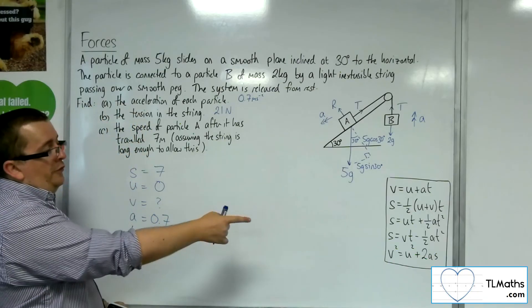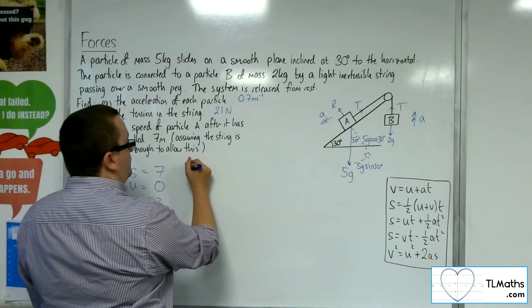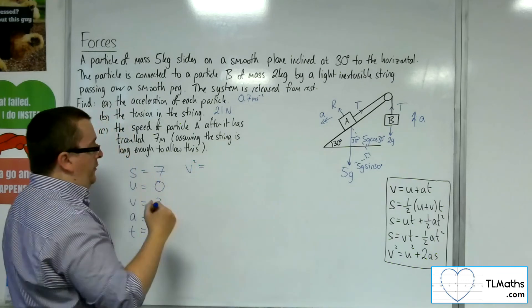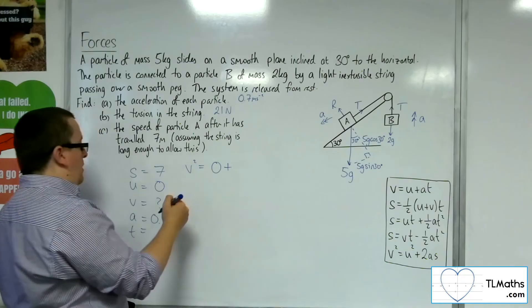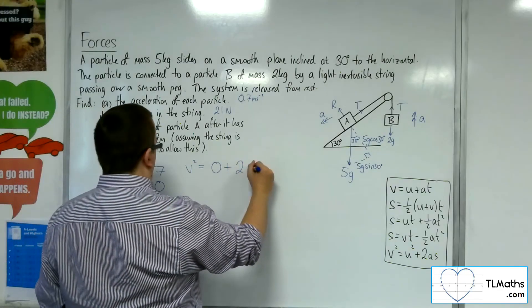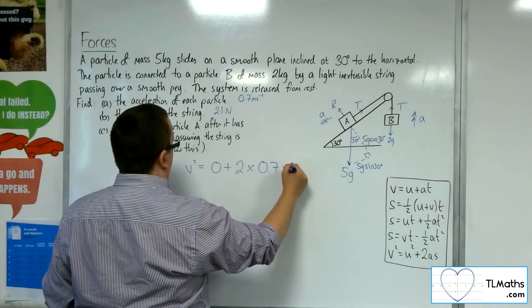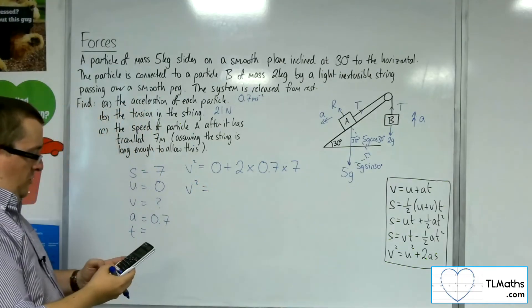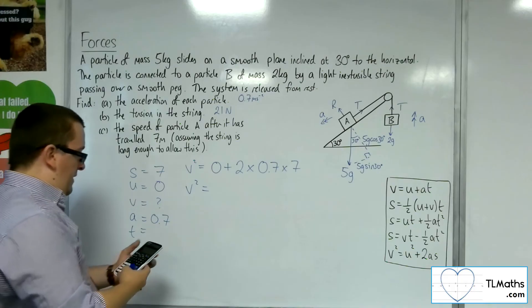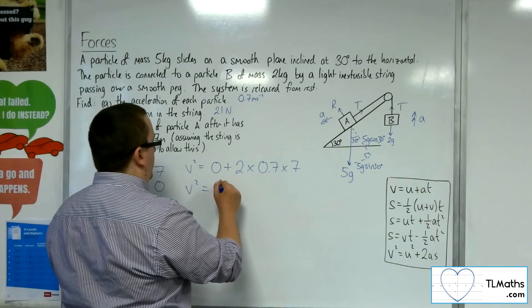So V squared is equal to U squared, which is 0, plus 2 lots of A times S. So 2 lots of 0.7 times 7. So 2 times 0.7 times 7 is 9.8.